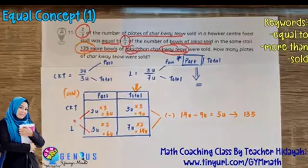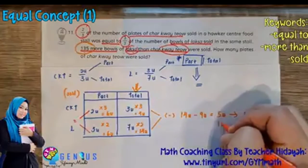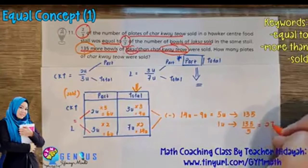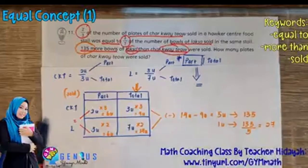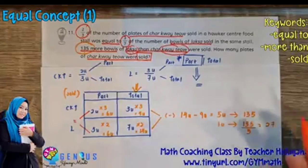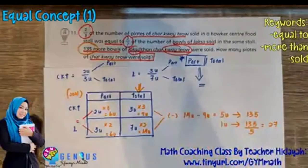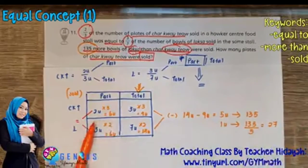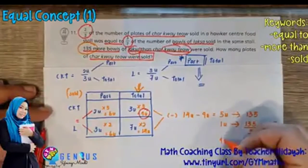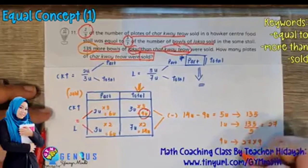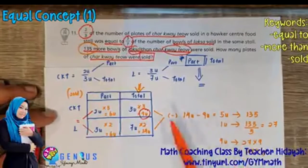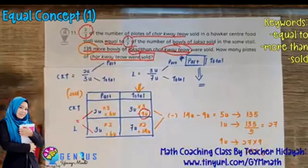Next, we find one unit: 135 divided by 5 equals 27. We want to know how many plates of char kway teow were sold. Looking at the table, the char kway teow total is nine units, so we calculate 27 times nine, which gives 243. That is the answer. This is how you solve an equal concept question involving fractions.